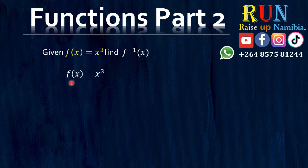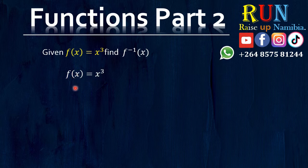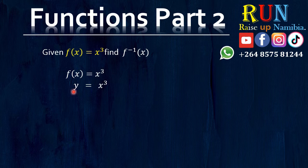So let's quickly write down f of x. f of x is equal to x cubed. How you find the inverse: rule number 1, replace the f of x with y. After you do that, exchange — wherever you see an x, write a y, and wherever you see a y, write an x.